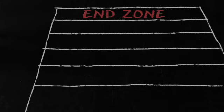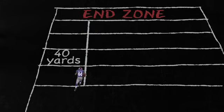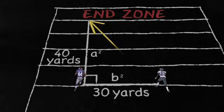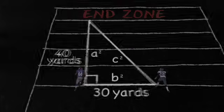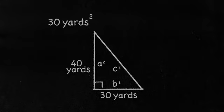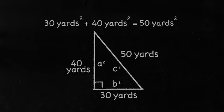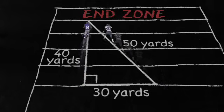Relating this to football, let's say the ball carrier is heading for the end zone 40 yards away, and the defender stands 30 yards away and needs to intercept him. If these two distances are the legs of a right triangle, then the distance the defender needs to run is the hypotenuse. Using the Pythagorean Theorem, 30 yards times 30 yards added to 40 yards times 40 yards gives the hypotenuse squared. Taking the square root: 40 squared plus 30 squared equals 2500, which is 50 squared. So the distance of the hypotenuse is 50 yards.